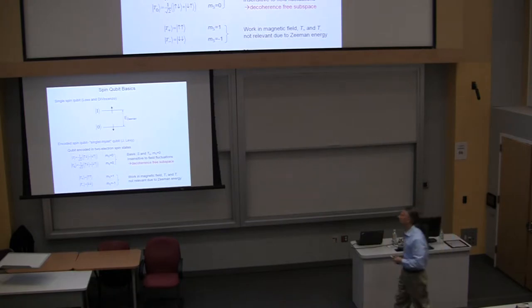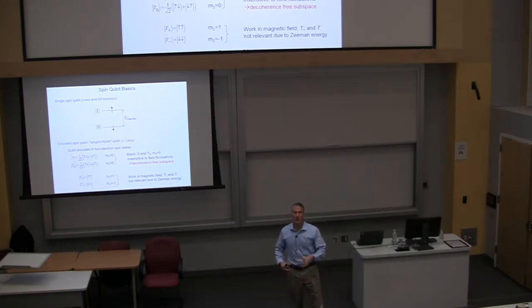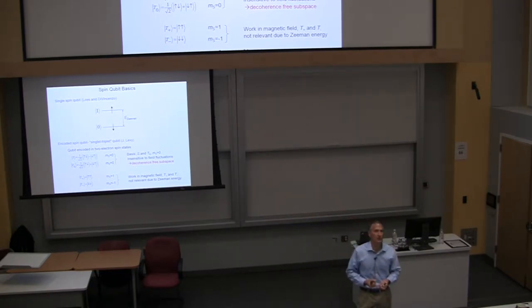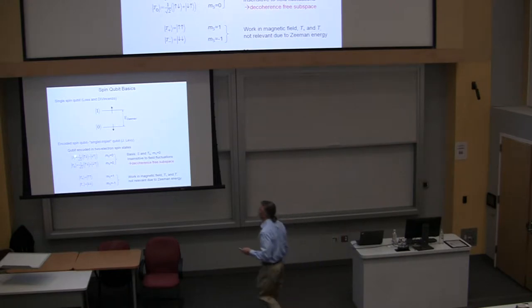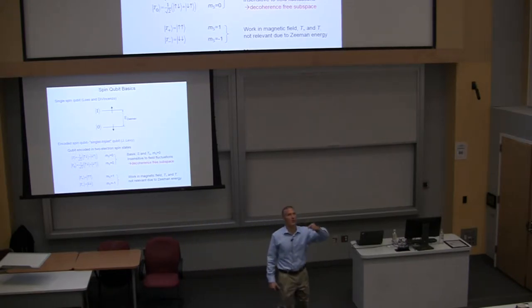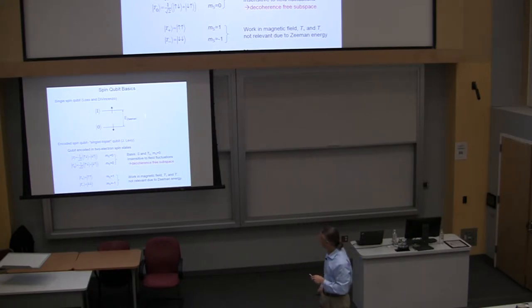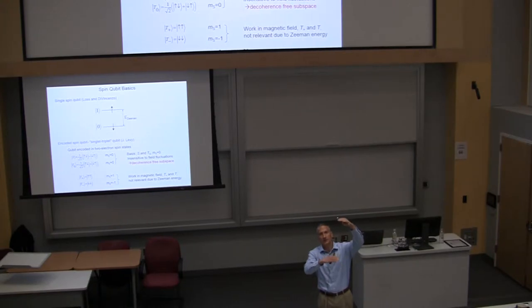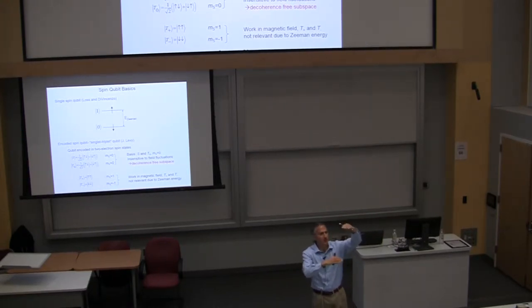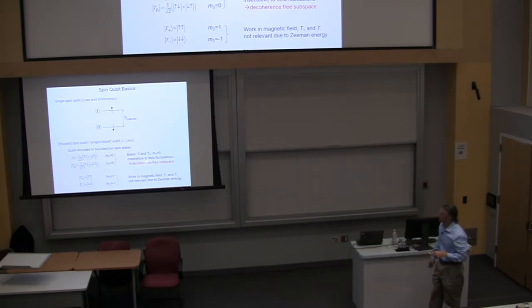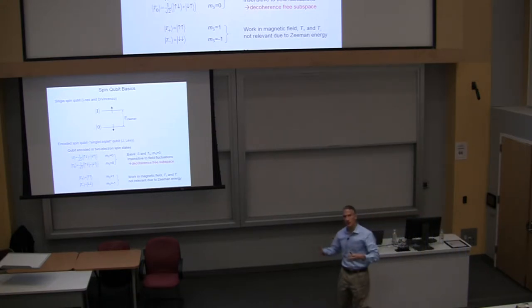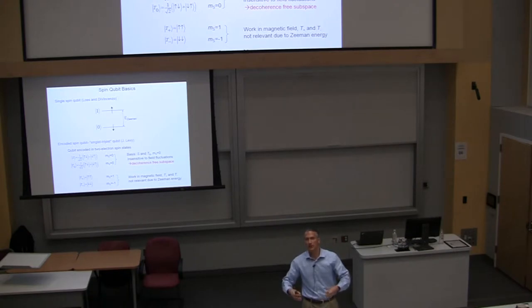That's the simplest qubit — the single electron qubit. There are other types of spin qubits with a more complicated state space. An example is a two-electron system where you use singlet and triplet spin states to encode the qubit degree of freedom. The motivation is that if you work in the basis of the S=0 singlet and triplet states, those two states are insensitive to overall fluctuations in the magnetic field. In contrast, for a single spin, the Zeeman energy is sensitive to the total magnetic field, so fluctuations lead to dephasing and decoherence. Working in this decoherence-free subspace gives you additional protection at the cost of having a more complicated two-electron system.